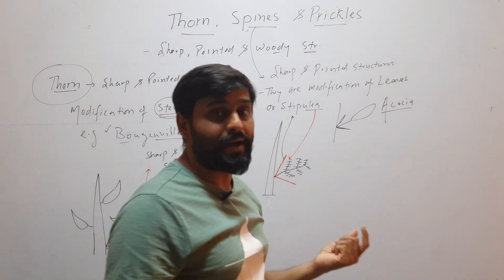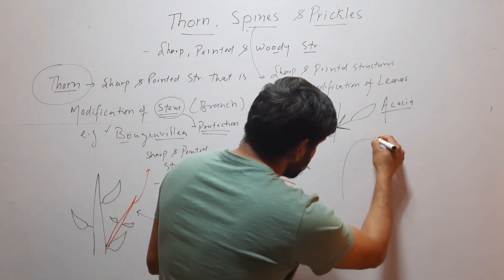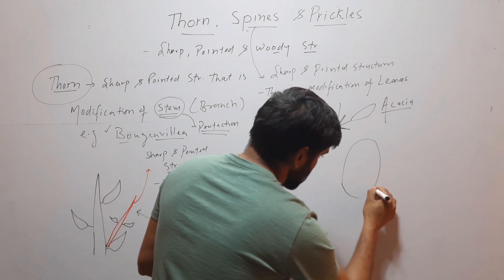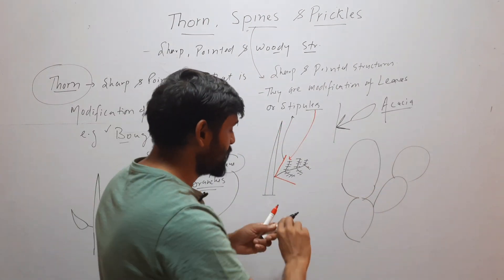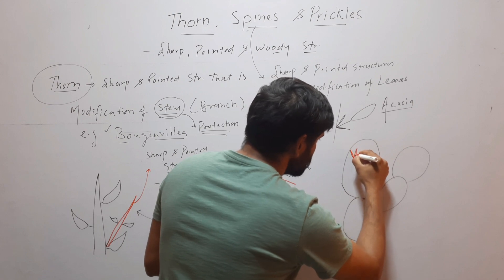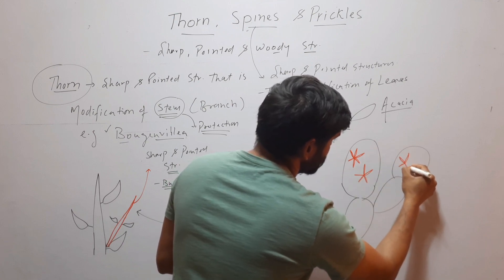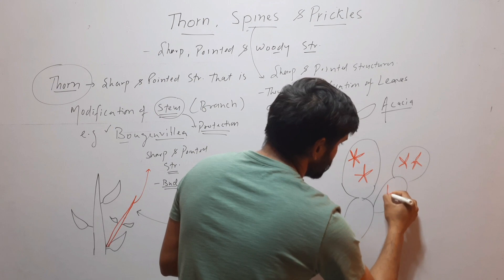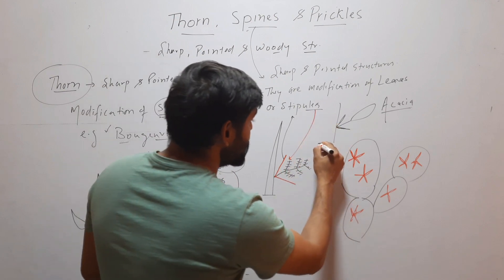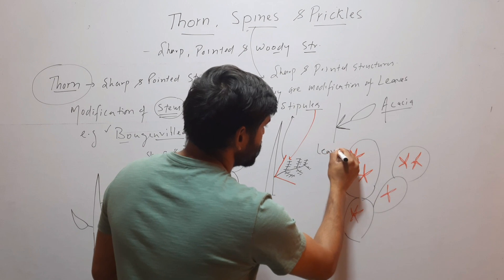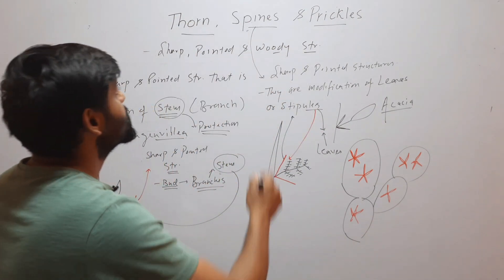In the case of acacia, stipules are modified into sharp pointed structures and these are called spines. And in cactus also, you will find that leaves are modified into spines like this. So when stipules or leaves are modified into sharp pointed structures, then these structures are called spines.